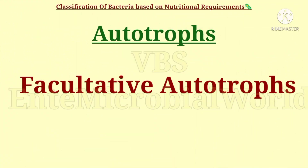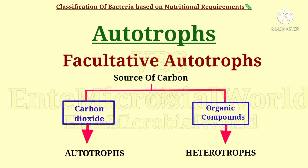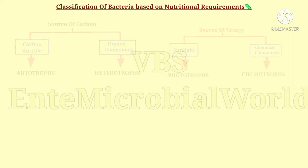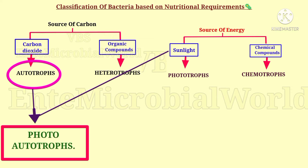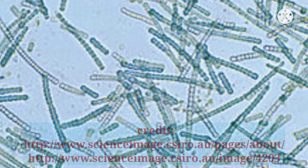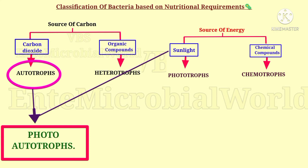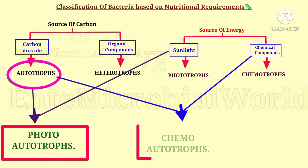Some autotrophs are facultative autotrophs — they can either live as autotrophs deriving their carbon from carbon dioxide, or they live as heterotrophs deriving their carbon from organic compounds. Some autotrophic bacteria derive their energy from sunlight and are called photoautotrophs. Photoautotrophs have chlorophyll pigment to capture sunlight. Some autotrophic bacteria derive their energy from chemical reactions and are called chemoautotrophs.